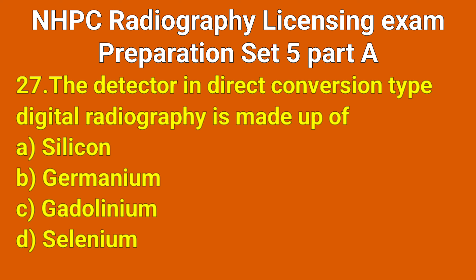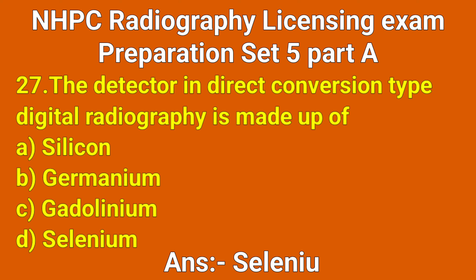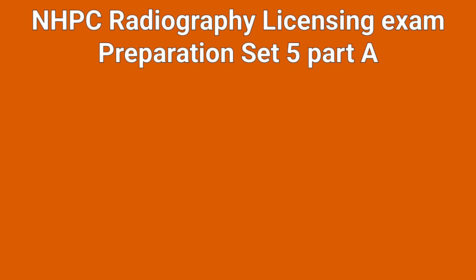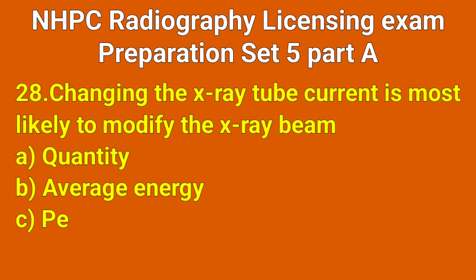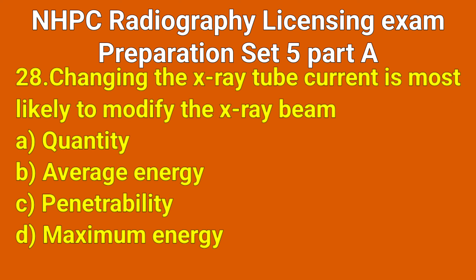Question number 27: The detector in direct conversion type digital radiography is made up of which option? Correct answer: option A (amorphous selenium implied).